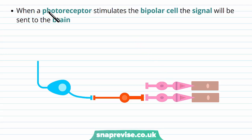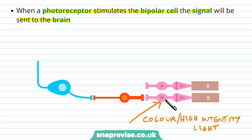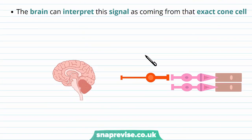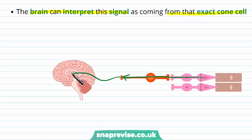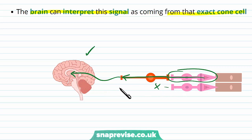Whenever a cone detects light and stimulates the bipolar cell, the signal is sent to the brain. Colour or high-intensity light hits a cone, which fires to the bipolar cell attached to it, which then fires to the sensory cell and up to the brain. Because the brain knows that one cone connects to one bipolar cell, it can interpret the signal as coming from that exact cone cell — not a neighbouring one, since that would involve a different bipolar cell and therefore a different response.